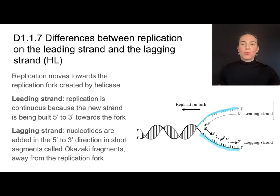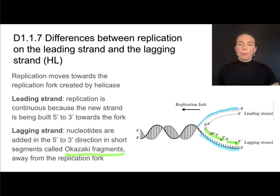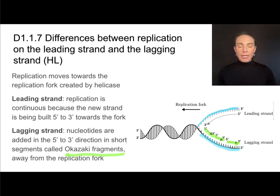After separation, a short segment called an Okazaki fragment — highlighted in green — is laid down in the 5-prime to 3-prime direction. Then another short segment is laid down, again in the 5-prime to 3-prime direction. So although we can only add things to the 3-prime end, overall the process still progresses toward the replication fork — it lays down an Okazaki fragment, jumps back, lays down another, and so on. The lagging strand is still adding only to the 3-prime end, just in short, discontinuous segments called Okazaki fragments.